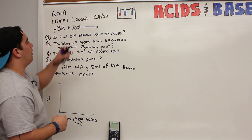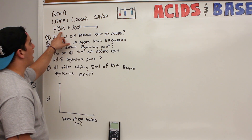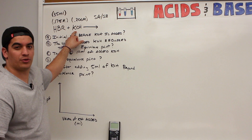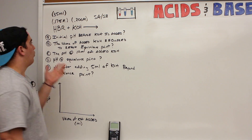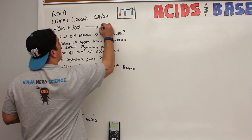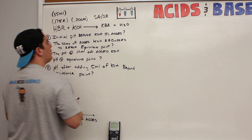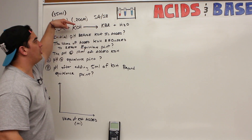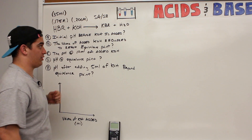If you do a strong acid/strong base titration, what's your product going to be? If you react a strong acid with a strong base, they're going to neutralize each other — it's a neutralization reaction. Out of a neutralization reaction you always get a salt and water. Potassium combines with bromide and hydrogen combines with OH to give you water and potassium bromide. This is a neutralization reaction with a unidirectional arrow because strong acids and strong bases react completely and completely dissociate.